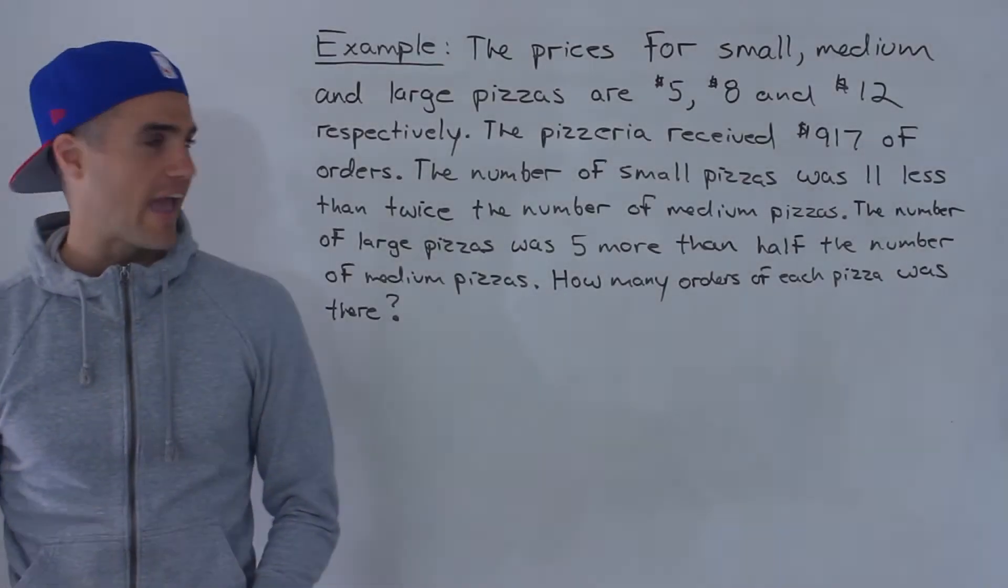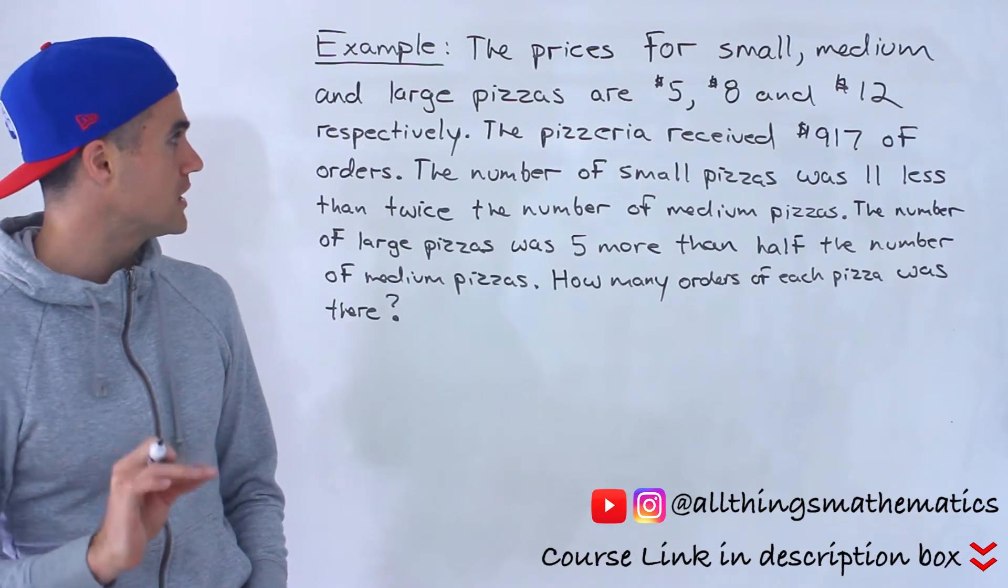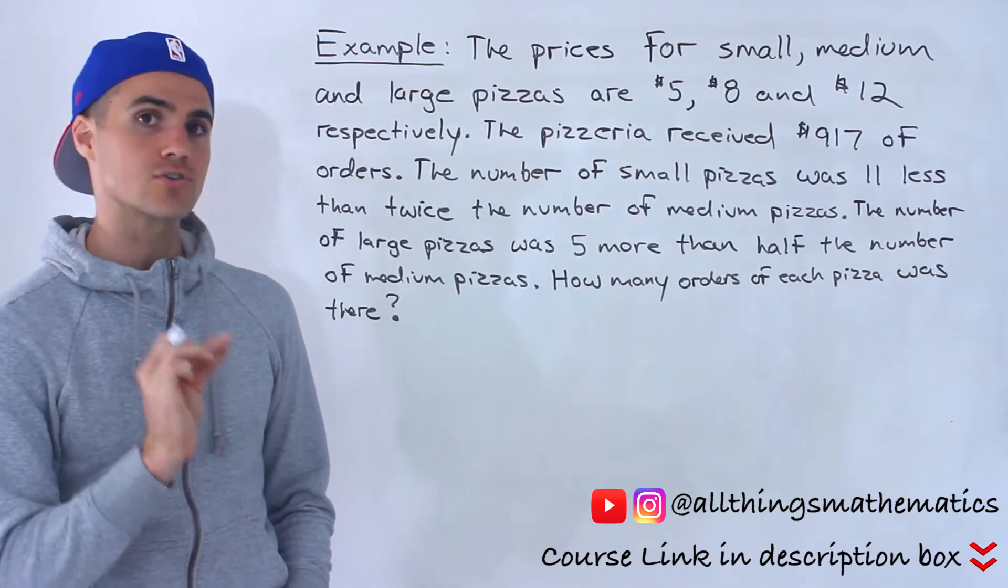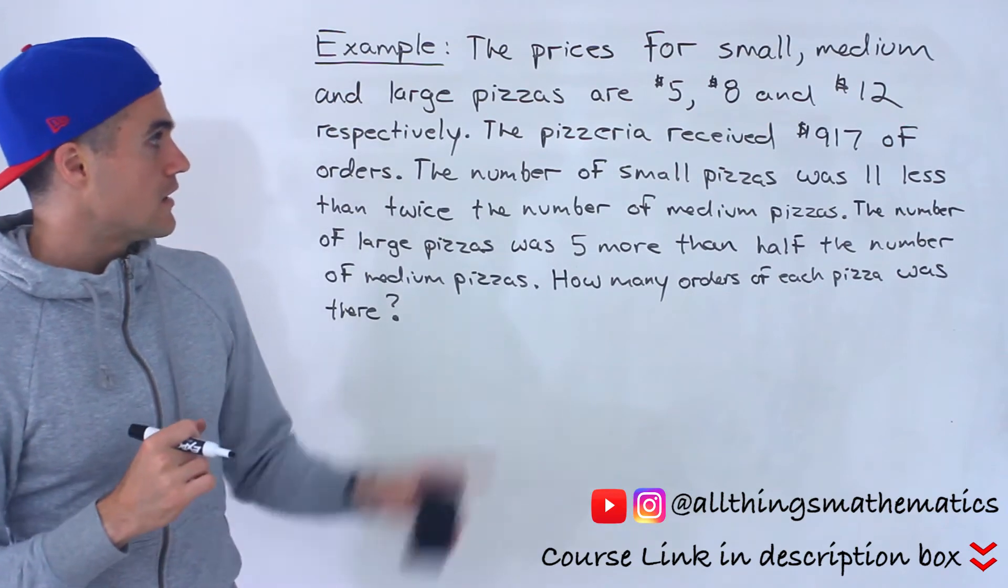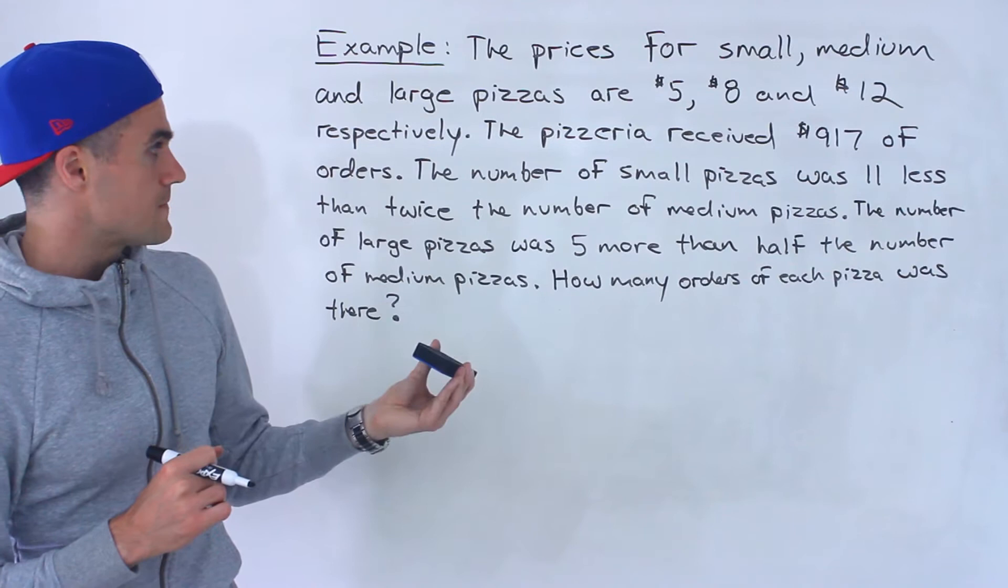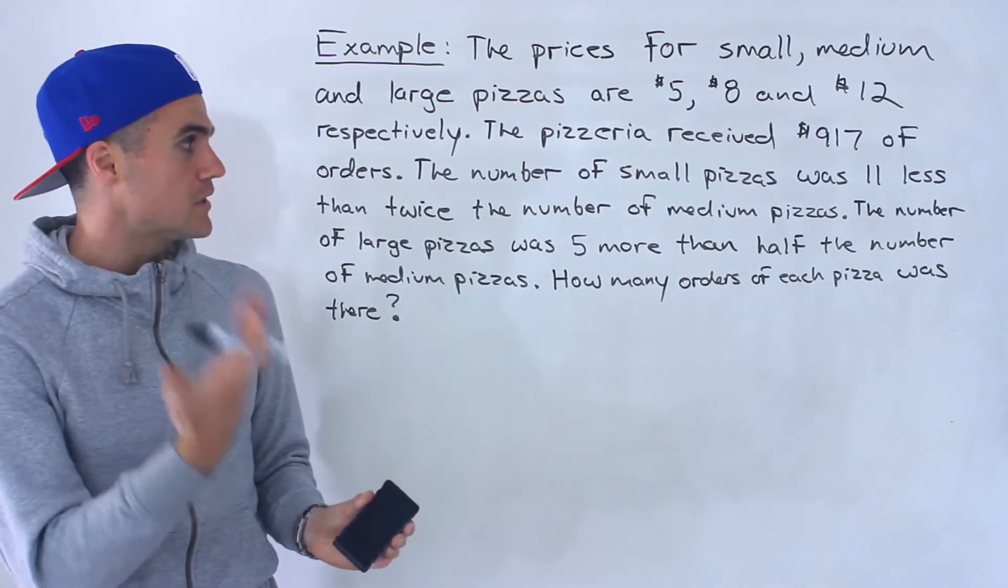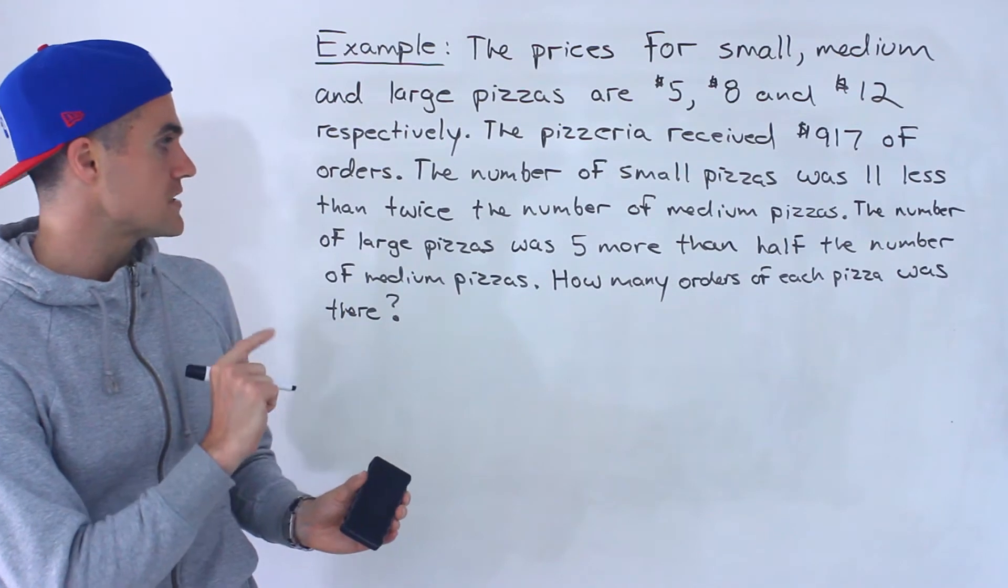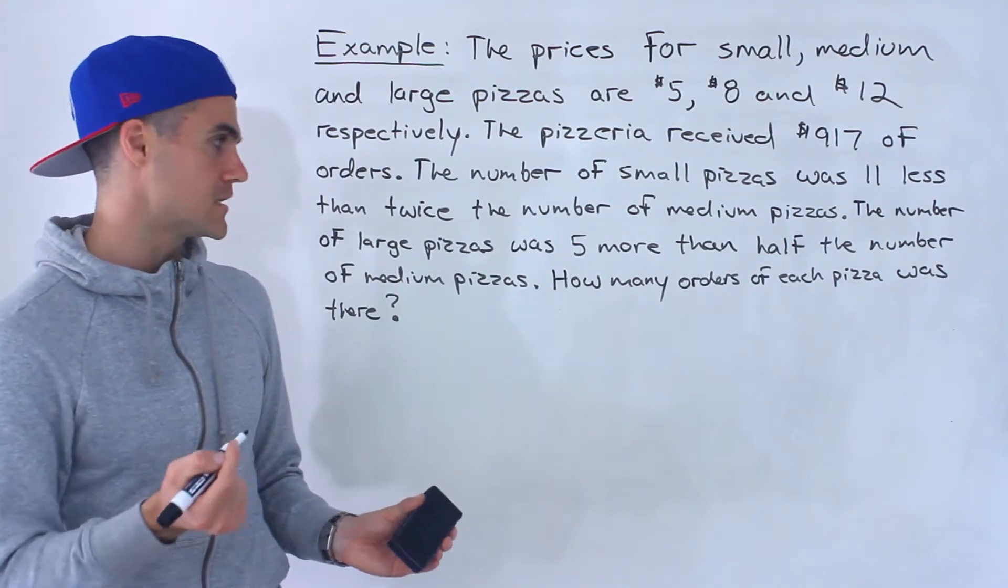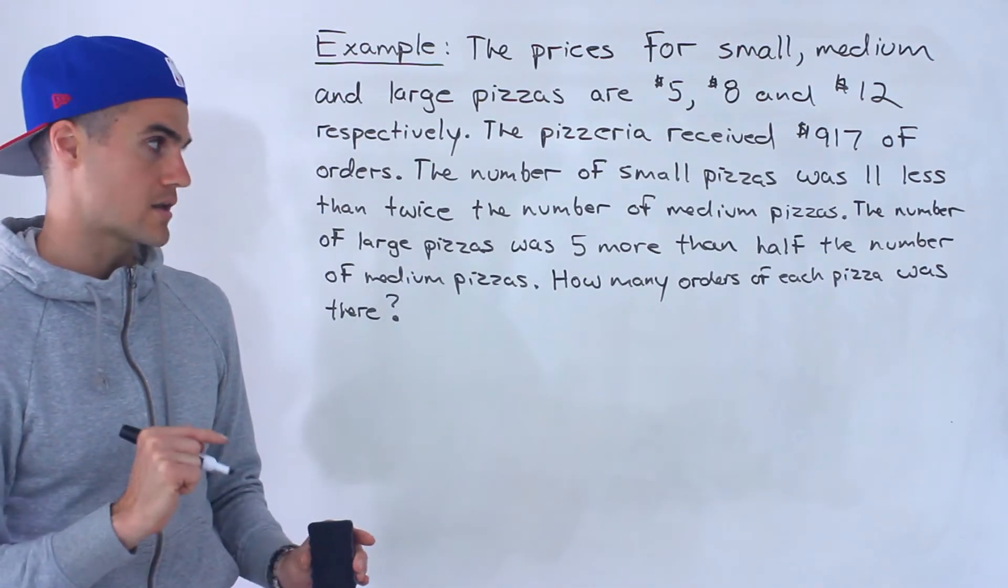What's going on everyone? Patrick here and in this next question what we're told is the prices for small, medium, and large pizzas are $5, $8, and $12 respectively. The pizzeria received $917 of orders. The number of small pizzas was 11 less than twice the number of medium pizzas and the number of large pizzas was 5 more than half the number of medium pizzas. How many orders of each pizza was there?